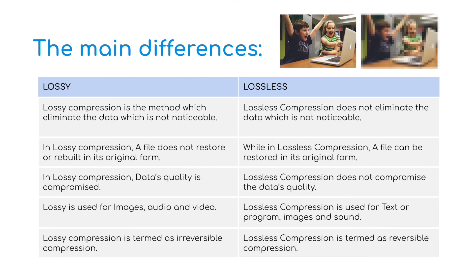To finish, here's a comparison table of the main differences. Lossy compression eliminates data that is not noticeable, while lossless compression does not. With lossy compression, a file does not restore to its original form when decompressed, whereas with lossless it does. Lossy compression compromises data quality; lossless does not. Lossy is used for images, audio, and video files, whereas lossless is used for text and program files, though lossless is also used for images and sound where integrity is imperative. Lossy compression is termed irreversible compression, while lossless is termed reversible compression.